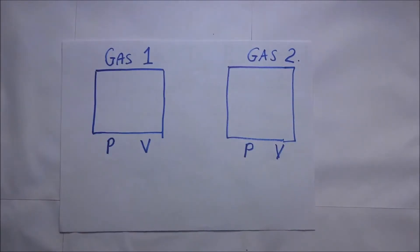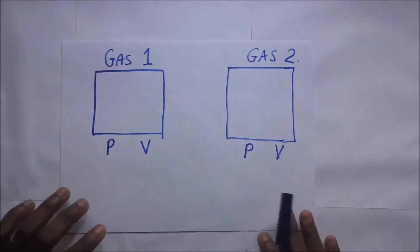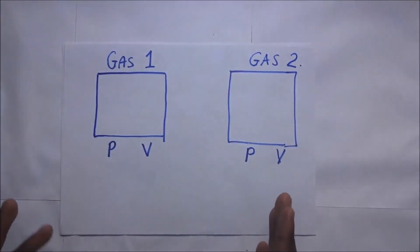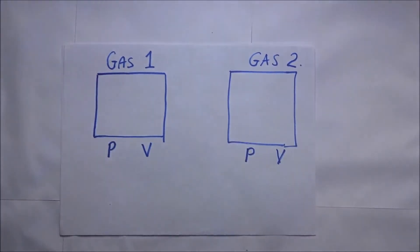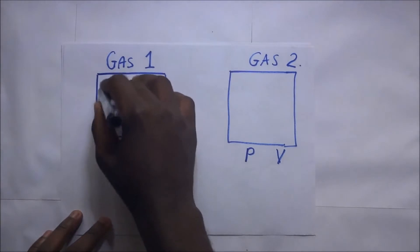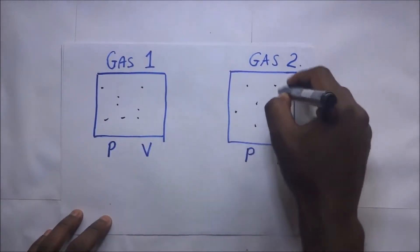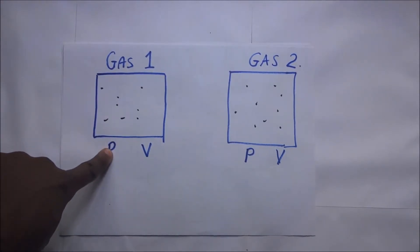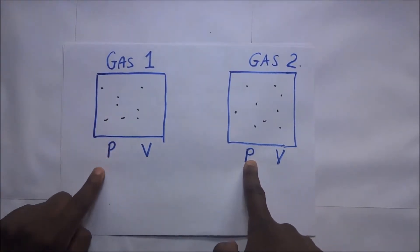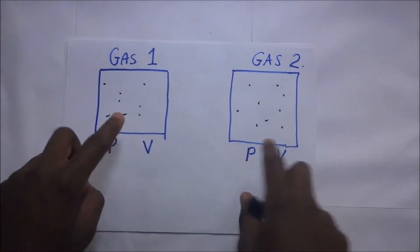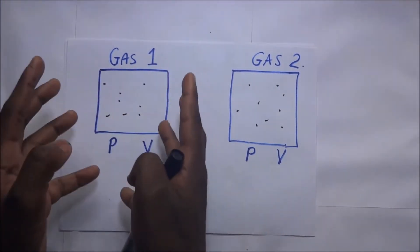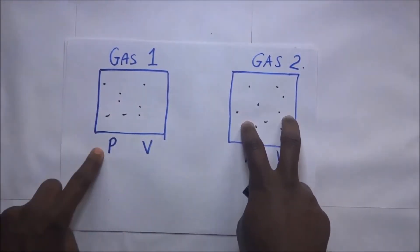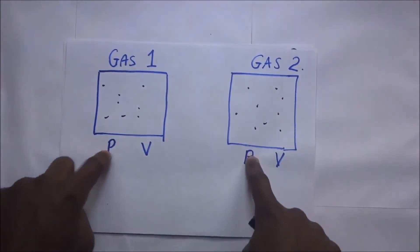We shall consider two gases — gas one and gas two — placed in two different containers. We are saying that gas one and gas two are subjected to the same pressure, and they are in containers of the same volume. So the volumes are the same for gas one and gas two, the pressure is the same, and the volumes are the same.